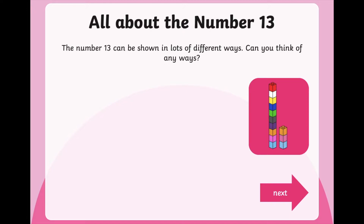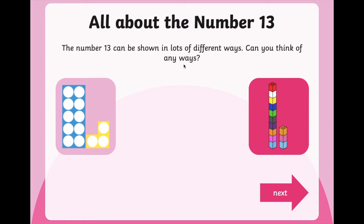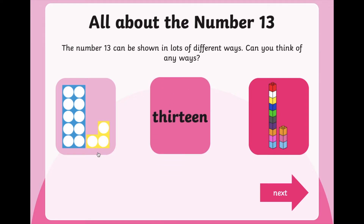We can show the number 13 in lots of different ways. One way is you could build it with some cubes in your classroom or at home. Can you think of any other ways? We could use the numicon — just the way I've been showing you all the other weeks, we start off with the number 10 numicon and add on the other part to make numbers between 10 and 20. So for the number 13, it's 10 add 3. You might use numicon, blocks, cubes, or even the number word.